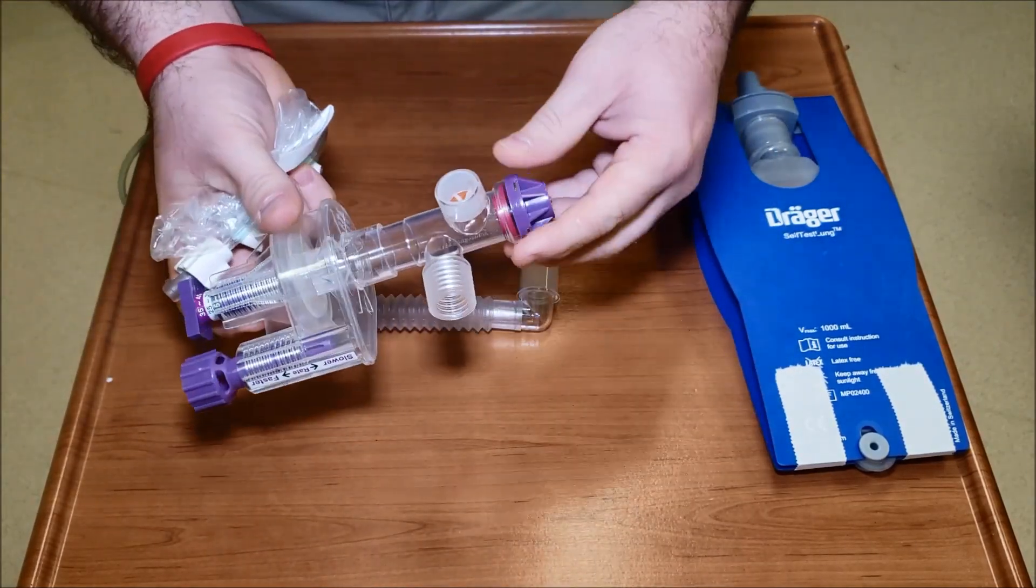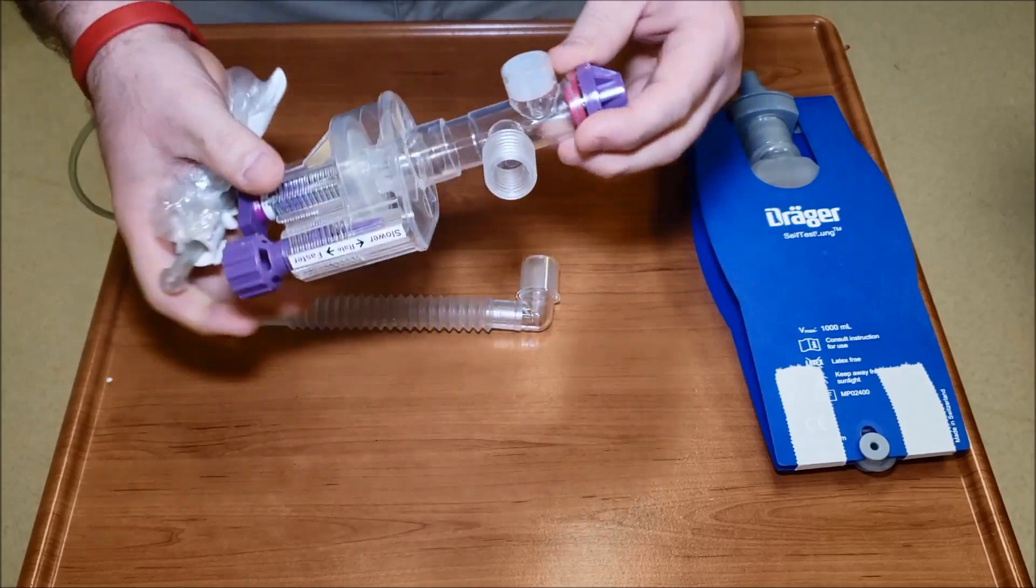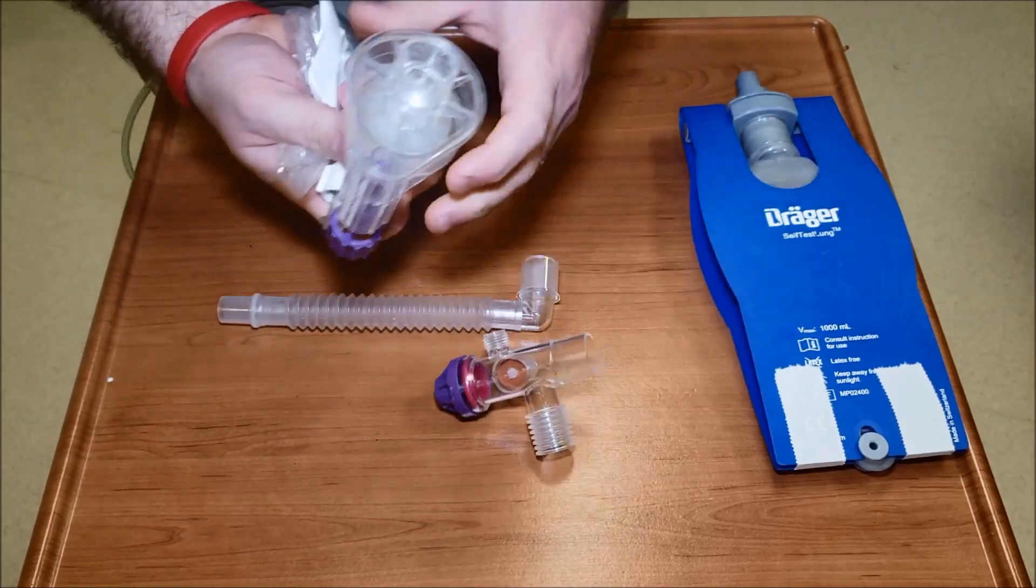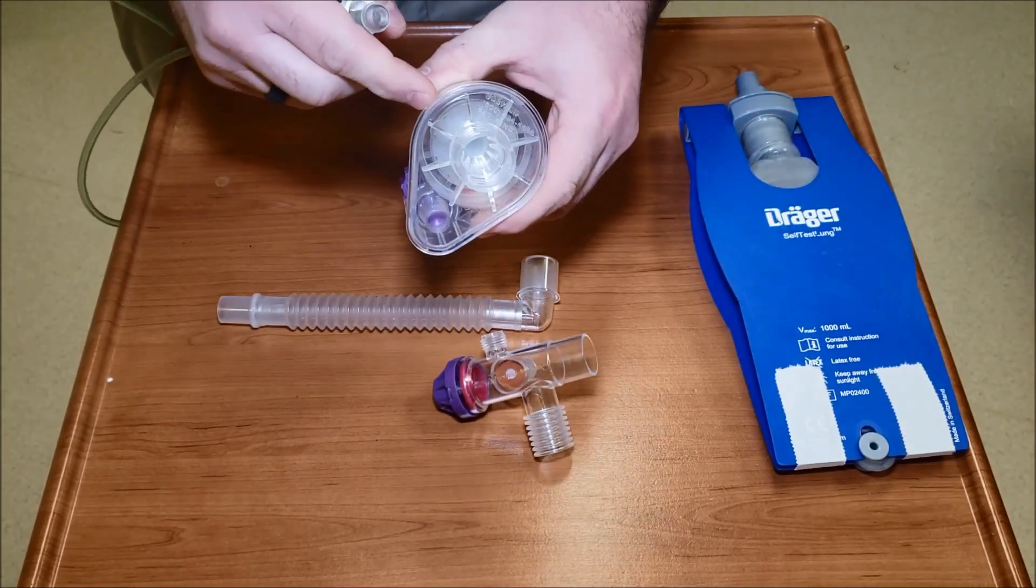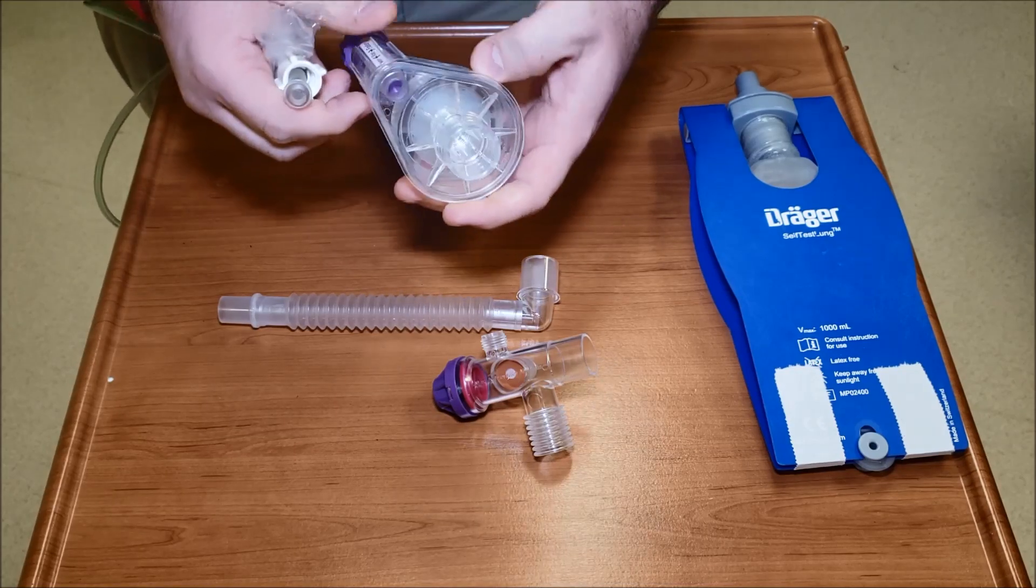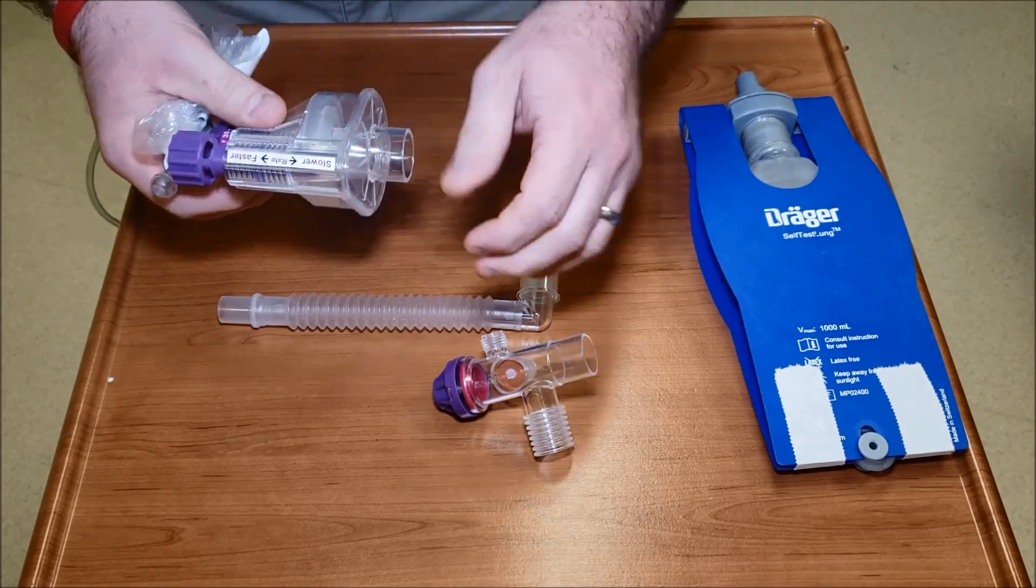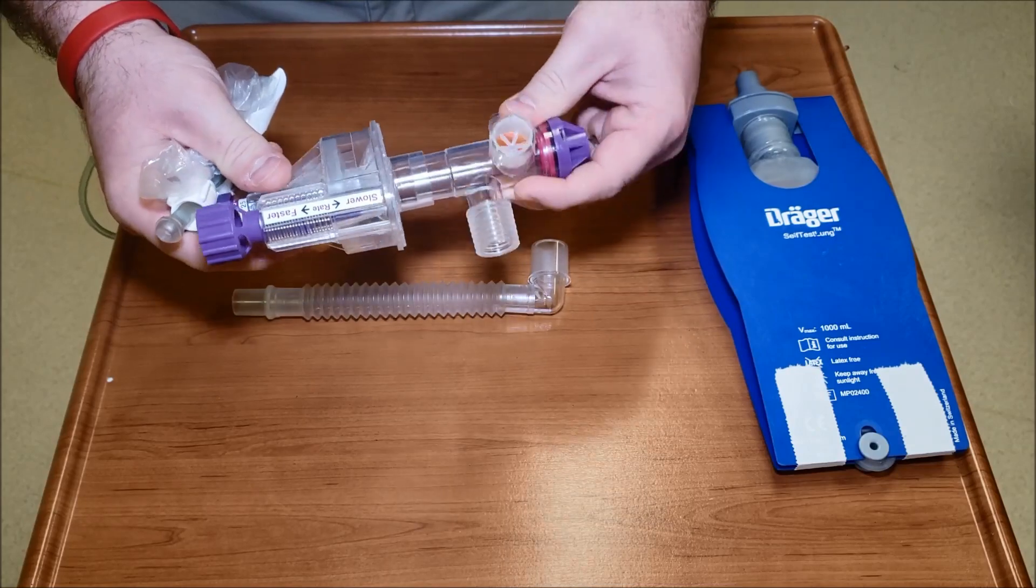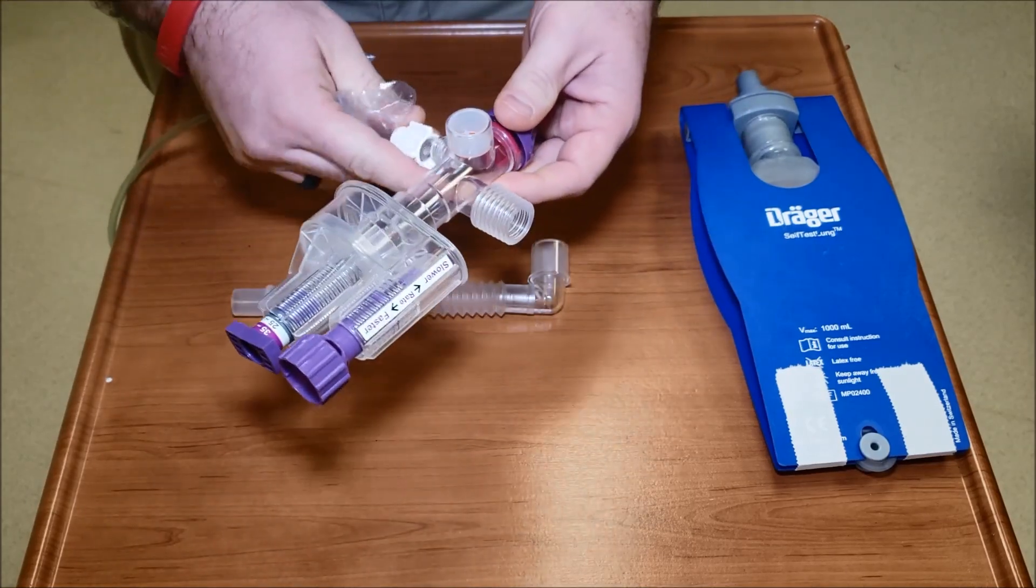You're going to see this is the automatic resuscitator. This is where your diaphragm is located inside of there. That's the part that becomes real sticky if it's expired and it will not cycle, which is a major problem trying to ventilate.